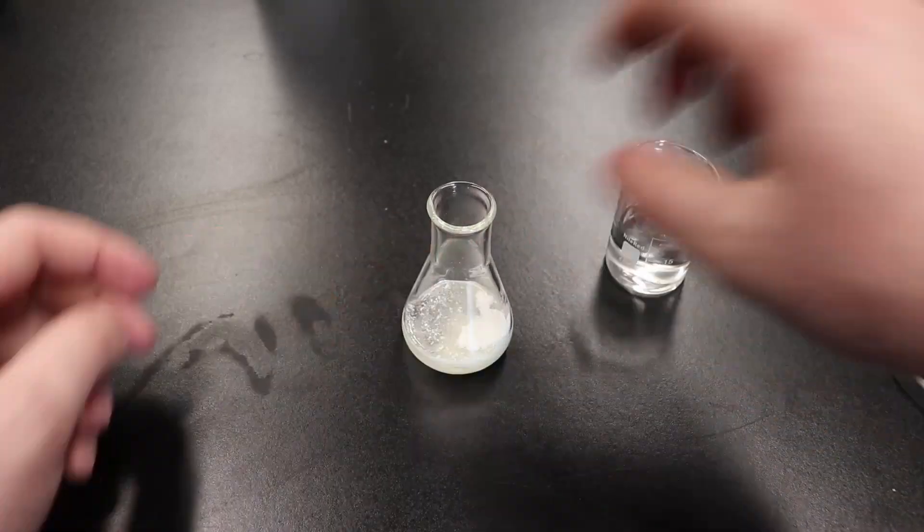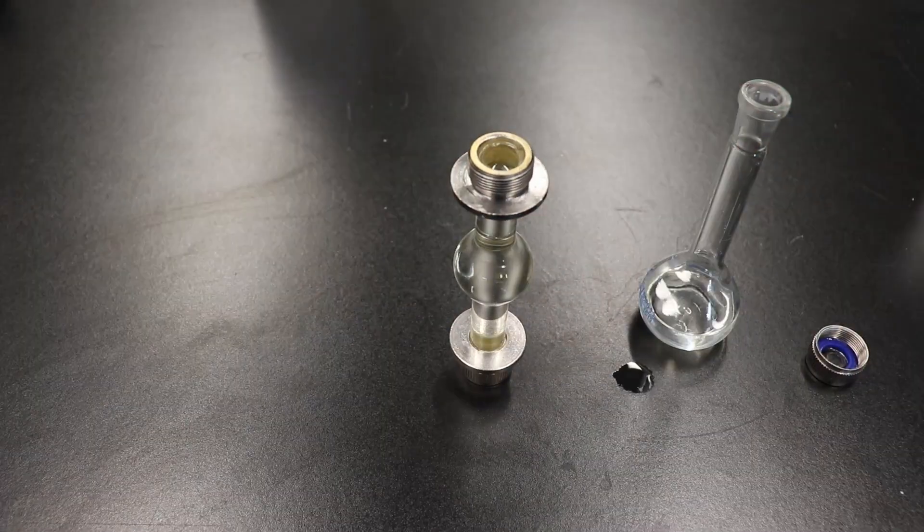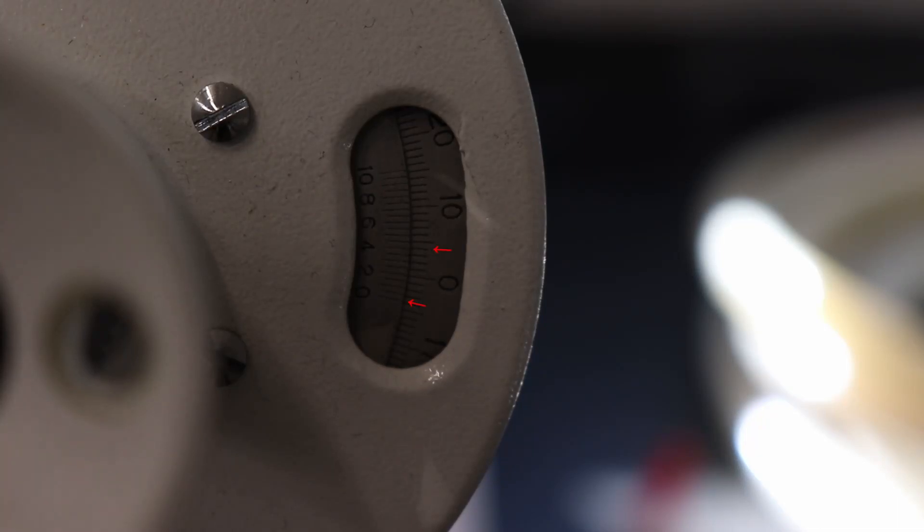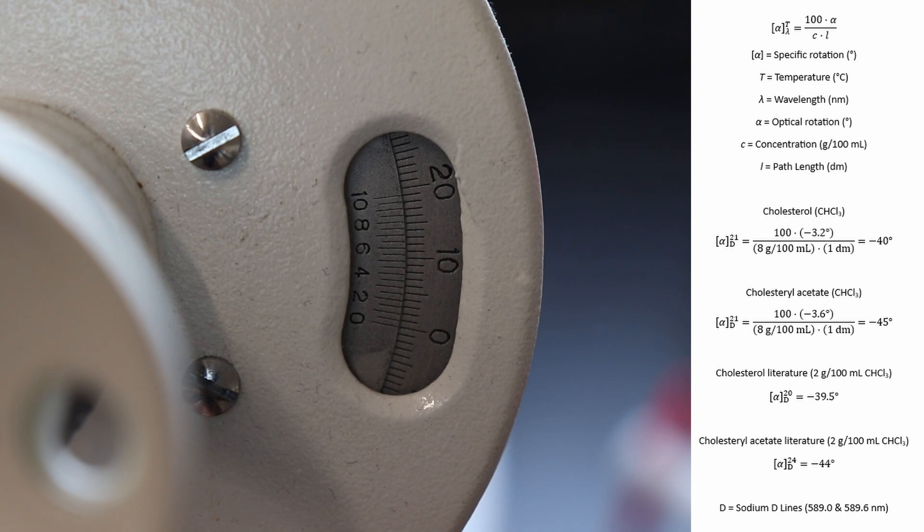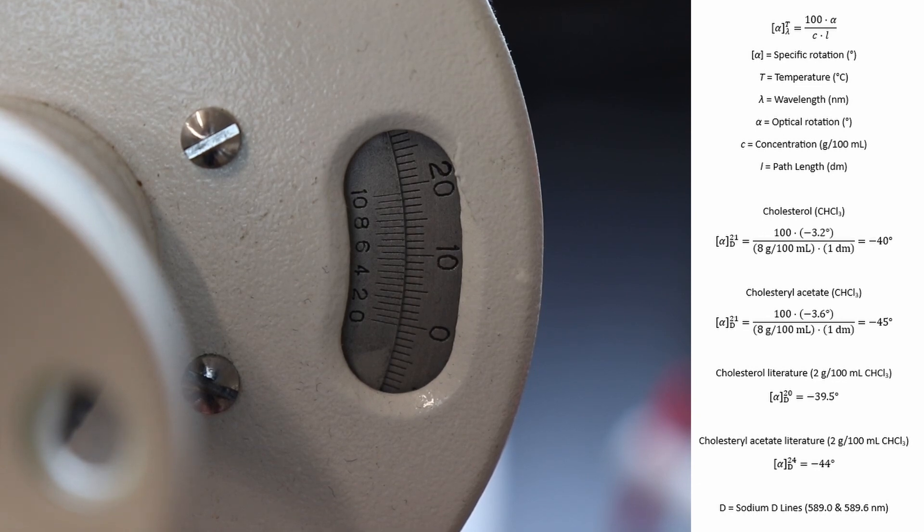I then prepared a solution of cholesterol acetate in chloroform at a concentration of 8 grams per 100 milliliters. I then measured the optical rotation of the solution and found it to be negative 3.6 degrees. Now that I have the optical rotations of both cholesterol and cholesterol acetate, I can calculate the specific rotations. I calculated the specific rotation of cholesterol to be negative 40 degrees, which matches well with the literature value of negative 39.5 degrees.